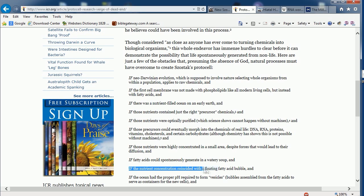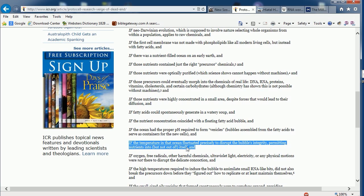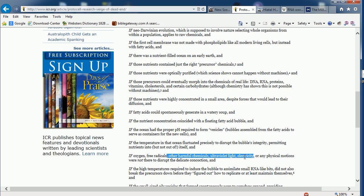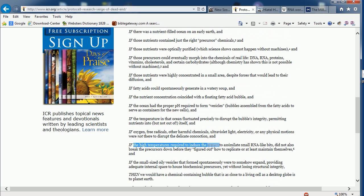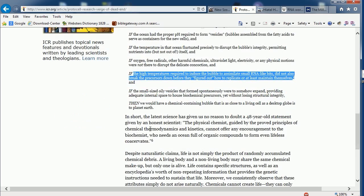We'll move on. If the nutrient concentration coincided with floaty fatty acids in a bubble. And if the ocean had a proper pH required to form vesicles, bubbles assembled from fatty acids to serve as containers for the new cells. And if the temperature in the ocean fluctuated precisely to disrupt the bubble's integrity, permitting nutrients into but not out of itself. And if oxygen, free radicals, and other harmful chemicals, ultraviolet light, electricity, or any physical motions were not there to disrupt the delicate concoction. And if the high temperature required to introduce the bubble, assimilate small iron out like bits, blah, blah, blah, blah, blah. I'm tired of reading this.